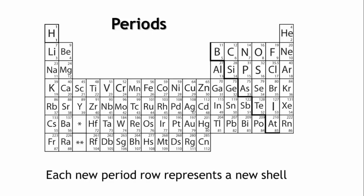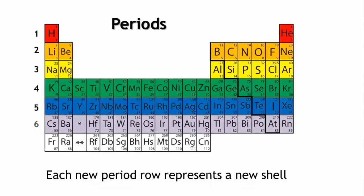Each new period row represents a new shell. Elements in the first period have one shell, and as we go down, the shells increase.